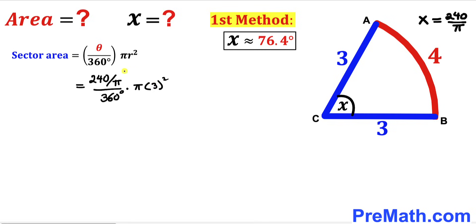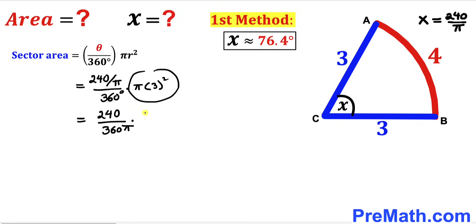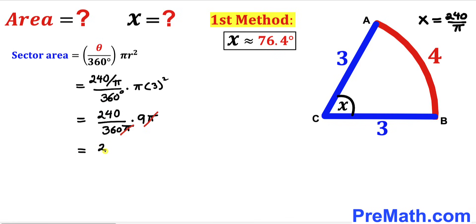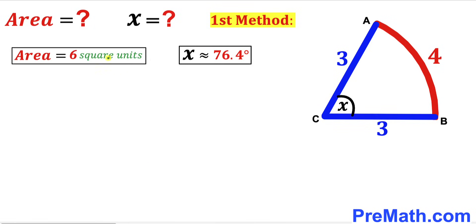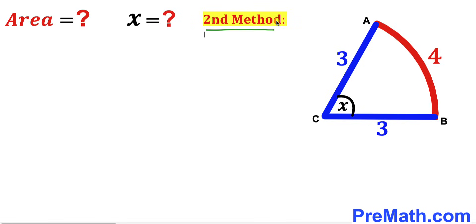Simplifying: this becomes (240/(360 × π)) × 9π. The π terms cancel, and 240/360 reduces to 2/3. So Area = 2/3 × 9 = 6 square units. The sector area is 6 square units and angle x is approximately 76.4 degrees by the first method.